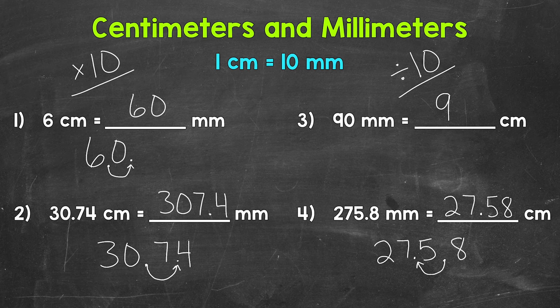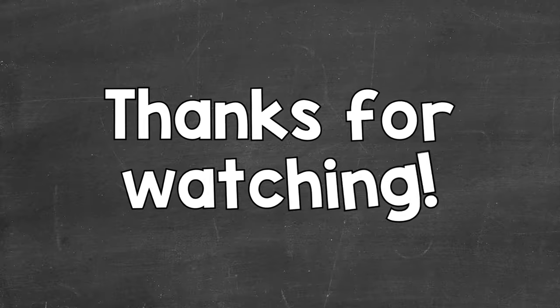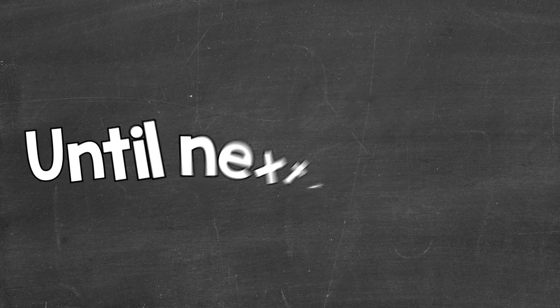So there you have it — that's how you convert between centimeters and millimeters. When we go from centimeters to millimeters, we multiply by 10 by moving the decimal once to the right. When we go from millimeters to centimeters, we divide by 10 by moving the decimal once to the left. I hope that helped. Thanks so much for watching. Until next time, peace.